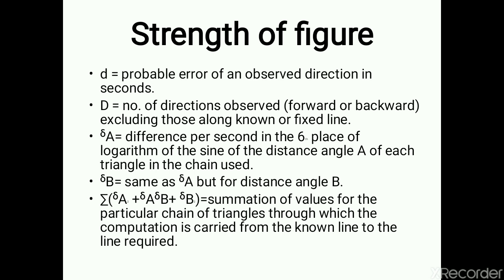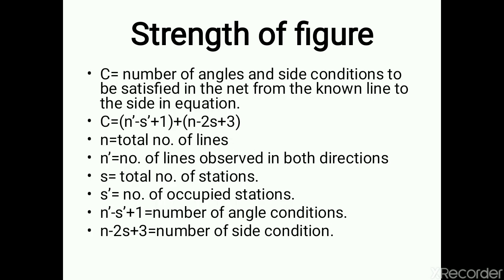δA is the difference per second in the sixth place of logarithm of the sine of the distance angle A of each triangle in the chain used. Similarly, δB is the same but for angle B. The summation Σ(δA² + δA·δB + δB²) is the sum of values for the particular chain of triangles through which the computations are to be carried out.